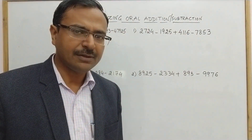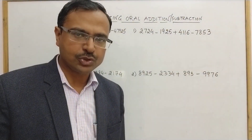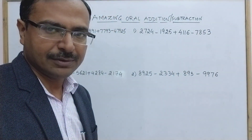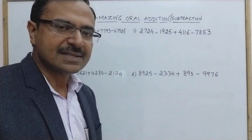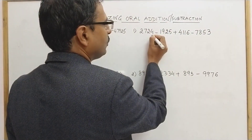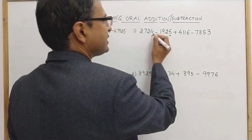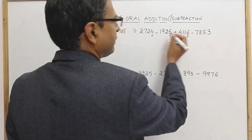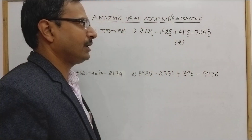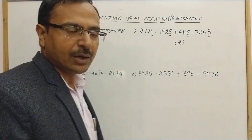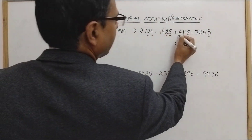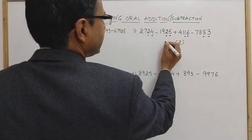Let's continue with the same method. All numbers are four-digit numbers, so we can skip one extra step. Starting with the unit digits: 4 minus 5 is minus 1, plus 6 minus 1 plus 6 is 5, and minus 3. So 5 minus 3 gives 2. Now moving to the tens place: 2 minus 2 is 0, plus 1, so 1. Then 1 minus 5 is minus 4. That's the second digit.